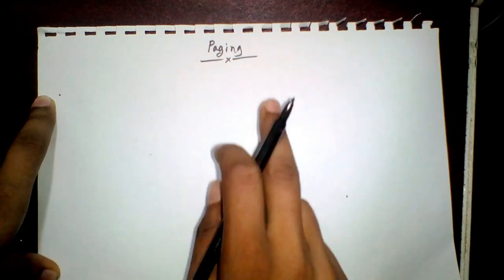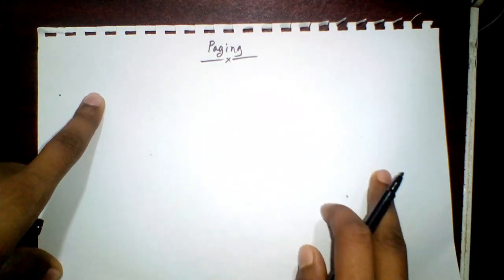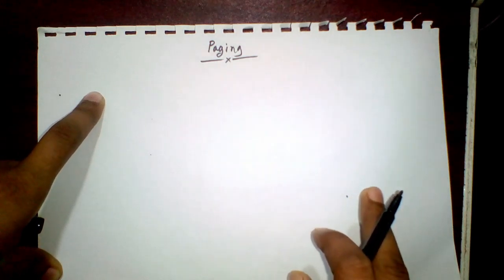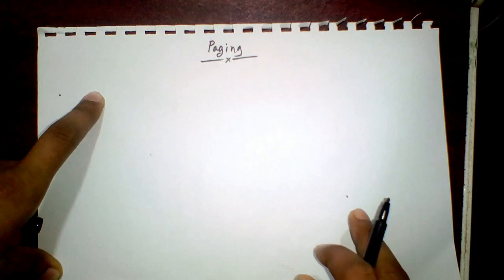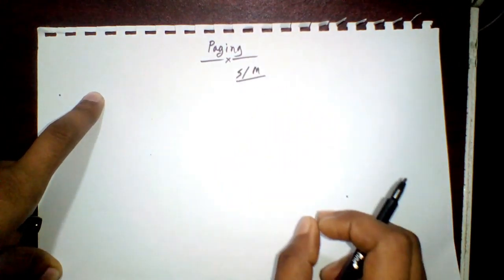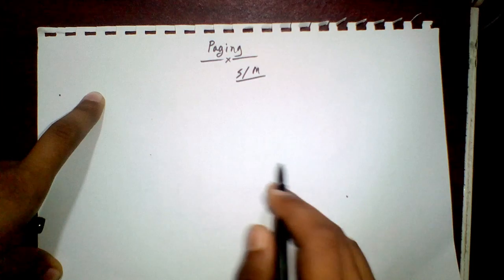Hi everybody, welcome to my channel. Today we will learn about paging. Paging is a very important concept in memory management systems. If you are well-versed in paging, you will surely do well in your examination on memory management. So let us learn what paging actually is. Paging is dividing our process into pages and storing them in our main memory. Since main memory size is limited, it stores only the most necessary processes, and the others are stored in secondary memory. When we need a process, we bring it into main memory using pages.